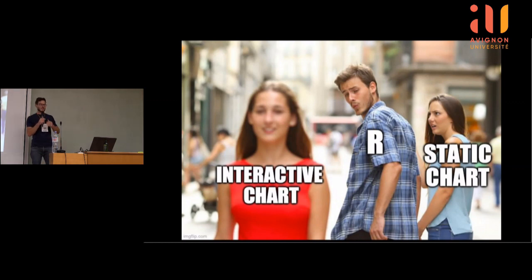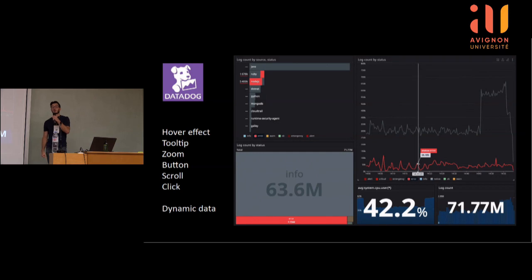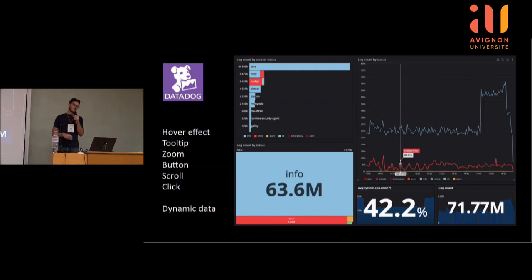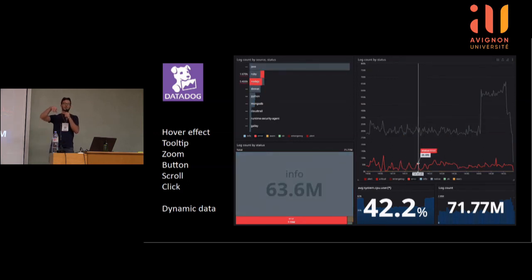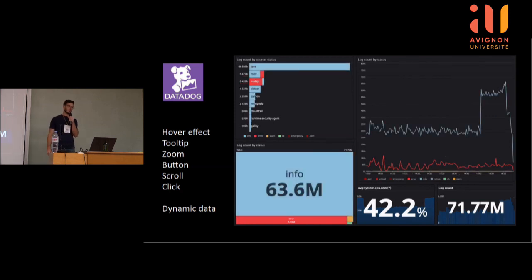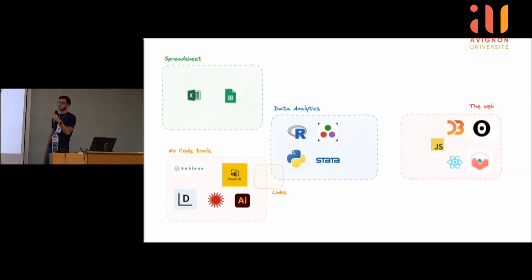L'humain étant insatisfait par nature, une fois qu'on voit que R peut faire autant de choses incroyables pour créer des charts statiques, on se rend compte qu'il manque quelque chose : les graphiques interactifs. Un graphique interactif, c'est quand on passe la souris sur un graphique, on a un curseur qui apparaît, un tooltip, le curseur est synchronisé d'un graphique sur l'autre. On peut faire vraiment plein de choses, explorer les données plus loin et raconter plus d'histoires. Cela m'amène à ma quatrième galaxie : les graphiques interactifs sur le web.